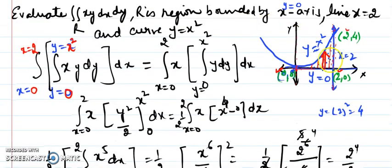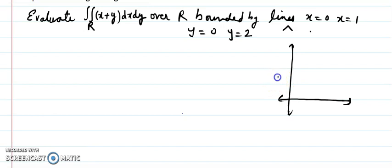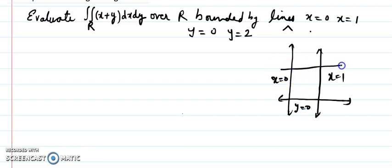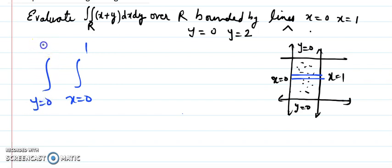Now let's take an example for a rectangular region. The region is bounded by x = 0, x = 1, y = 0, and y = 2. Plotting these: x = 0 is the y-axis, x = 1 is a vertical line, y = 0 is the x-axis, and y = 2 is a horizontal line. This gives a rectangular region. Since the region is rectangular, the limits can be taken in either order, and the structure will be the same.